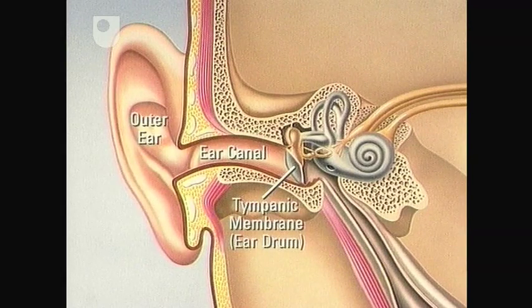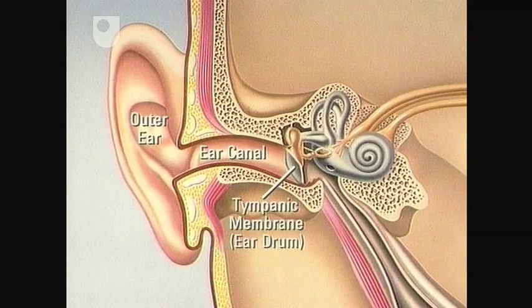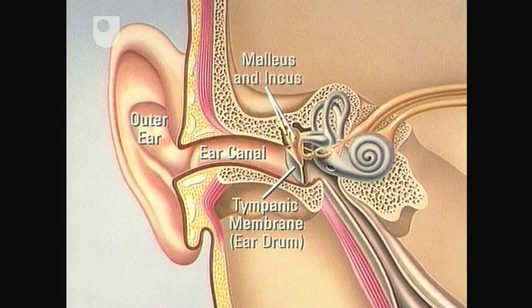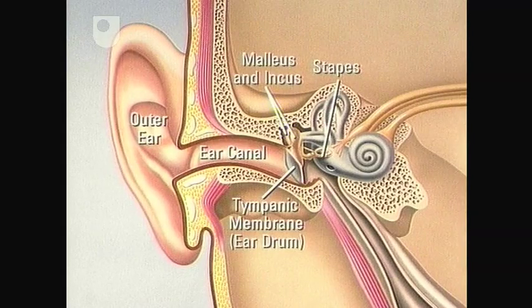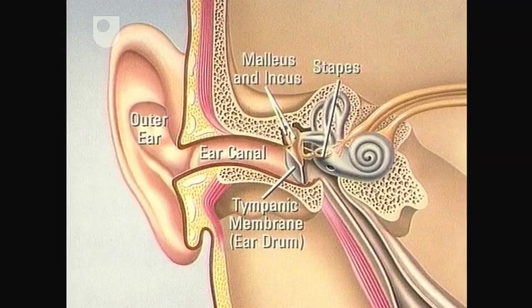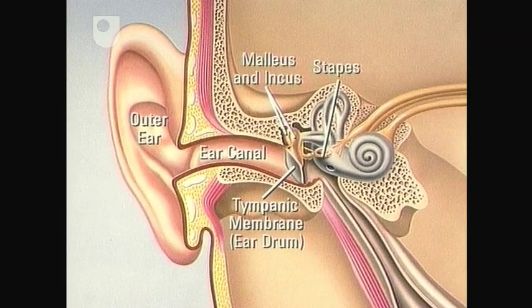Like all drums, it vibrates. And these vibrations are picked up by three bones. The malleus, the incus, and the stapes. These are the smallest bones in the human body. They're more commonly known as the hammer, anvil, and stirrup.